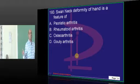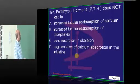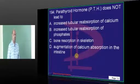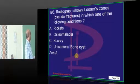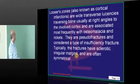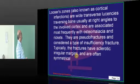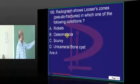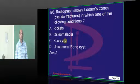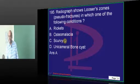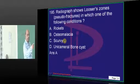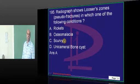Swan neck deformity - easiest question - rheumatoid arthritis. PTH does not lead to... our favorite question many times. It does not lead to phosphaturia - wait, it does lead to phosphaturia. So it does not lead to increased absorption of phosphates. Looser zones - classical of osteomalacia. Osteomalacia or rickets? Both osteomalacia and also rickets. Maybe the examiner forgot to put osteoporosis. A and B can be equal contenders - controversies.